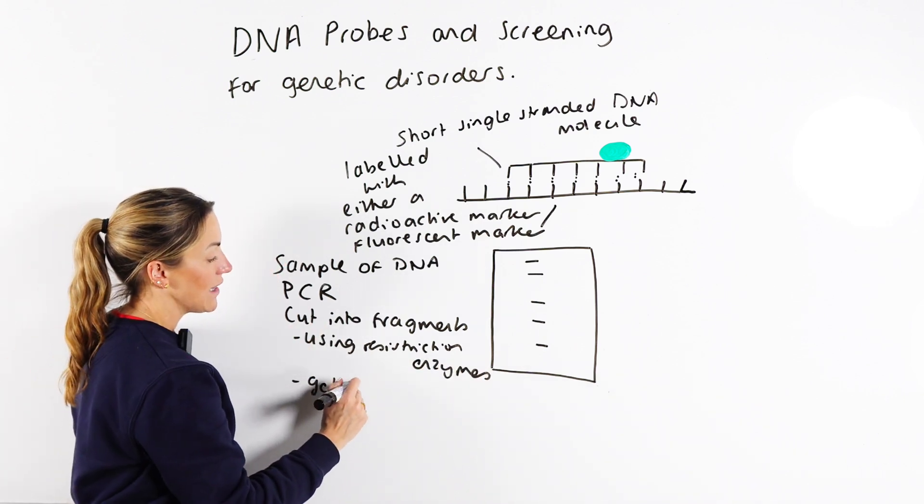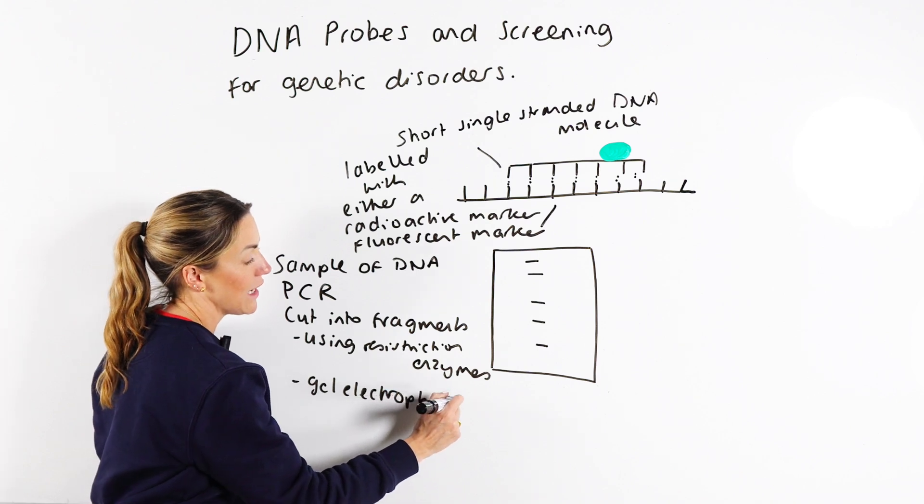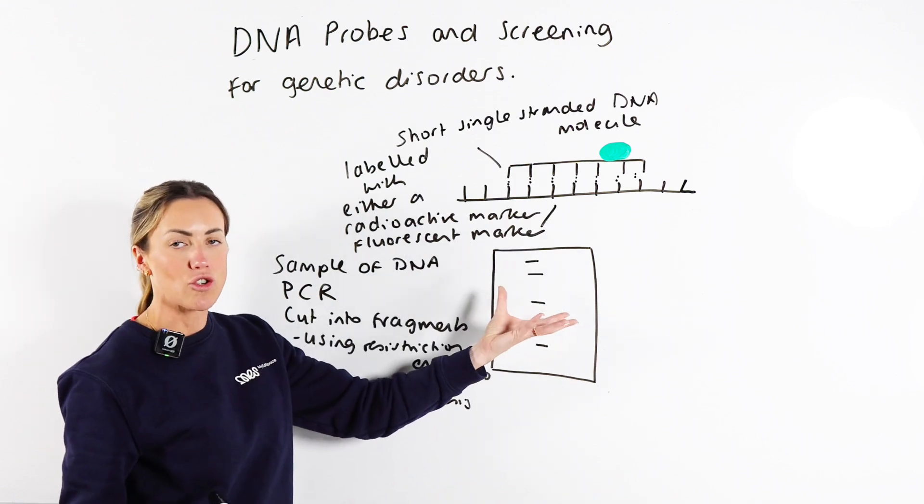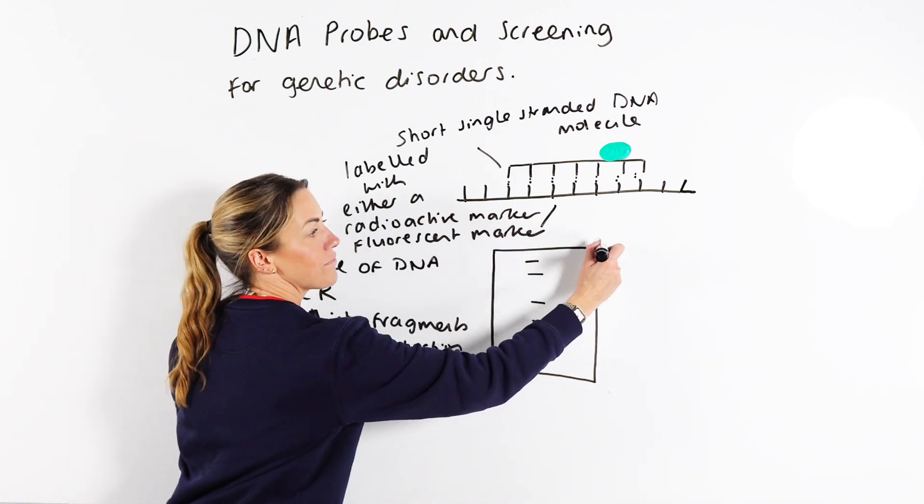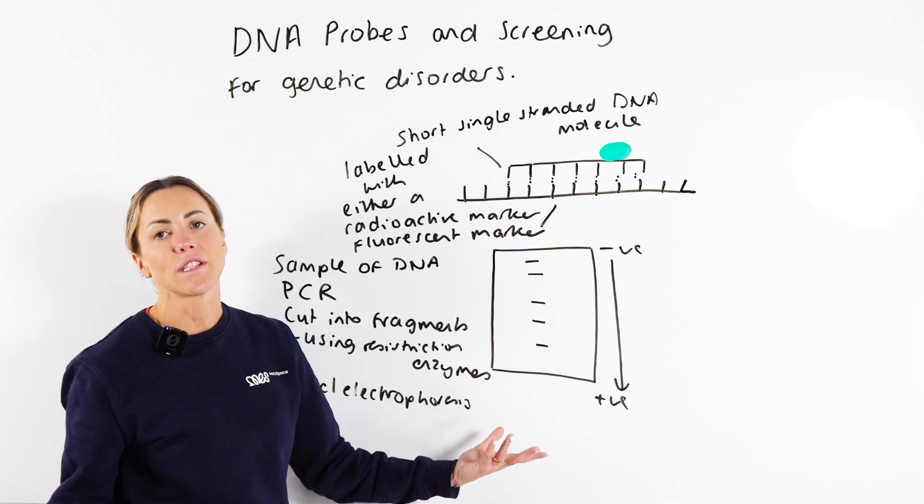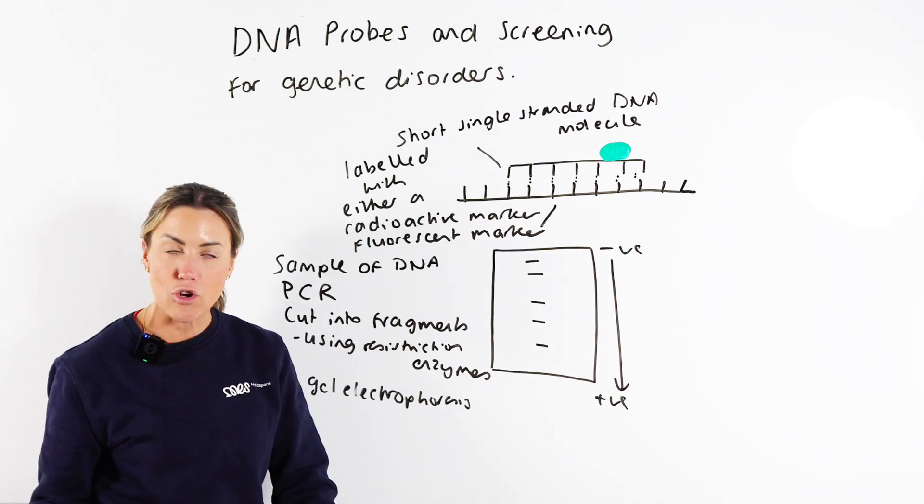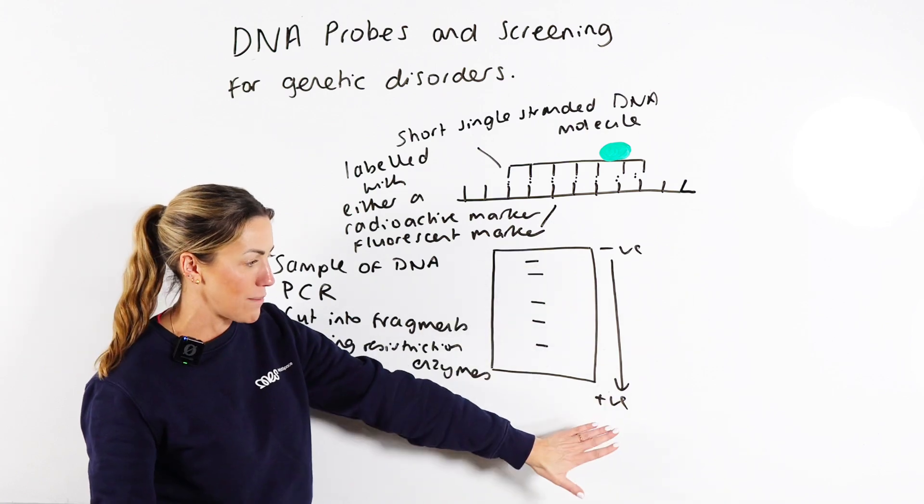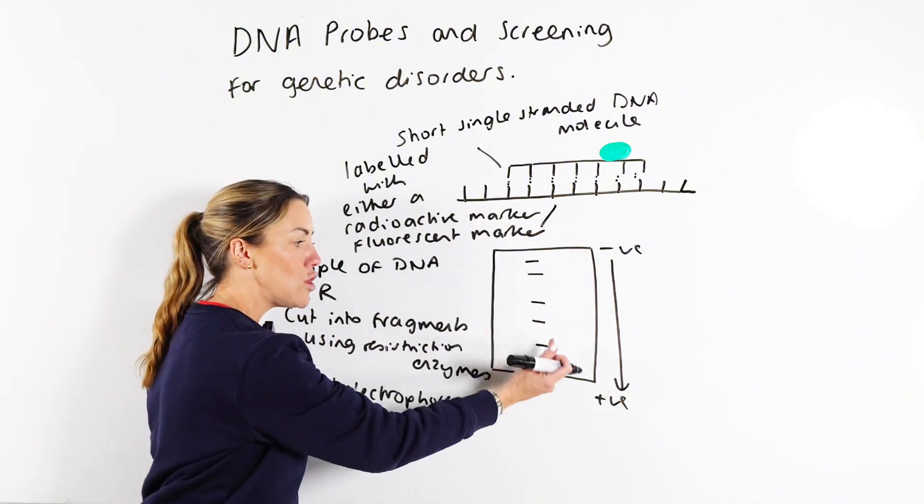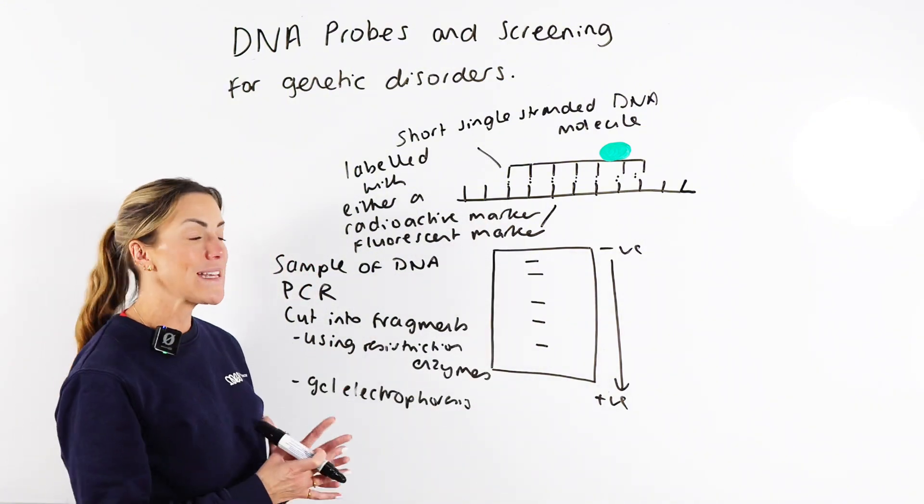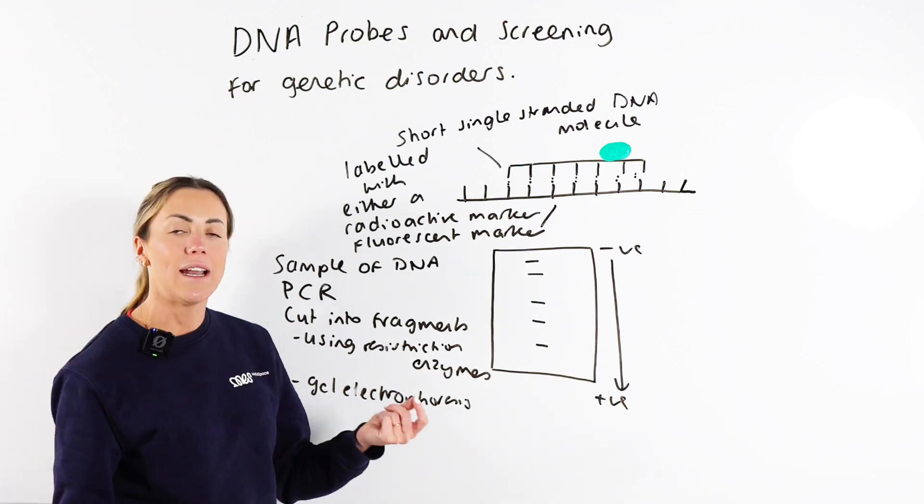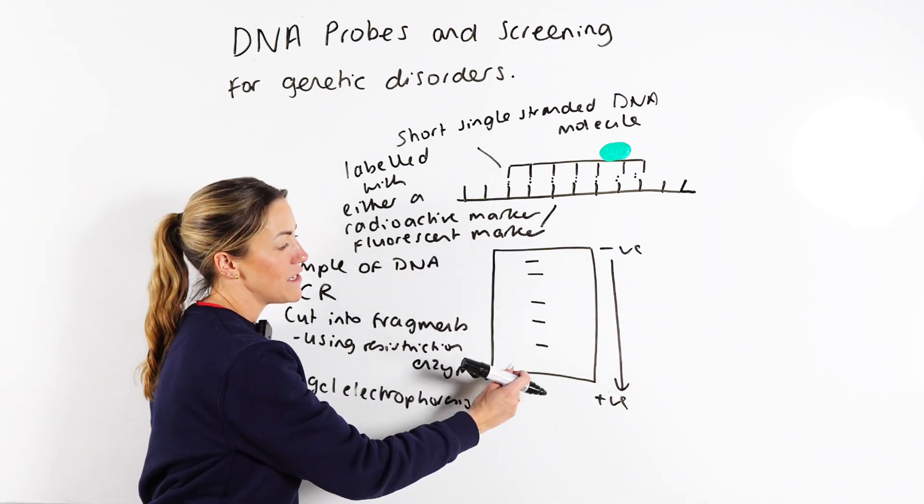Then you can use gel electrophoresis, which I've tried to show you over here. So you put the DNA fragments into wells on the gel at the negative electrode or the cathode end. They will move towards the positive electrode, which is the anode, and the reason they move towards the positive electrode is because DNA contains phosphate groups which are negatively charged, so they're attracted to the positively charged anode. Once that current is applied across the gel, they're going to move towards the anode and they're going to be separated based on that negative charge and the fact that the fragments will be different sizes or different lengths, so they'll move different distances in the gel.